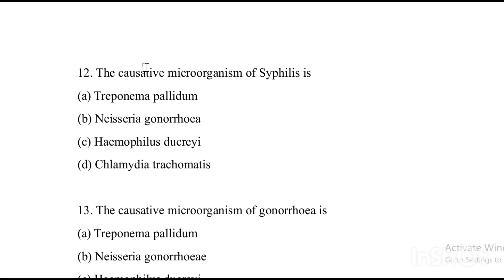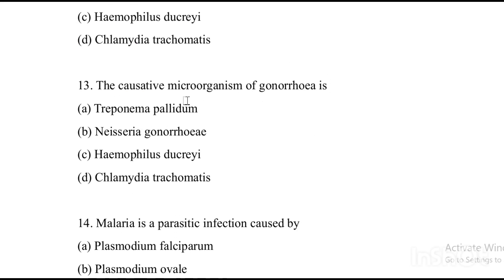Next question: The causative microorganism of syphilis is — Option A: Treponema pallidum. Option B: Neisseria gonorrhoeae. Option C: Haemophilus ducreyi. Option D: Chlamydia trachomatis. The causative microorganism of gonorrhea is Neisseria gonorrhoeae, Option B.